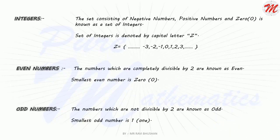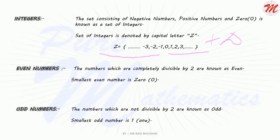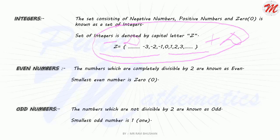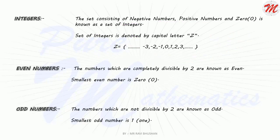Integer. What is an integer? A set that consists of numbers from zero to plus infinity, and all the negative natural numbers — that is, minus 1, minus 2, minus 3, ... to minus infinity — constitutes the integers. Any fraction is not an integer.